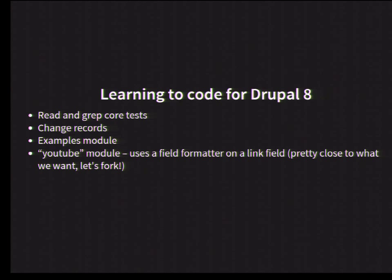Now we've got to learn how to do Drupal 8. The steps we went through were: looking at the core implementation, using grep to look for things in the codebase, reviewing tests, and looking at change records when we found functions no longer in existence. The examples module handles a lot of things like how to create config forms. The really big surprise was that this concept already exists in the YouTube module, which uses a field formatter to render a link field with a YouTube embed code. It's very similar — we've got a core field and we're using an embed code, just rendering it differently. We used that as inspiration to minimize our needs.